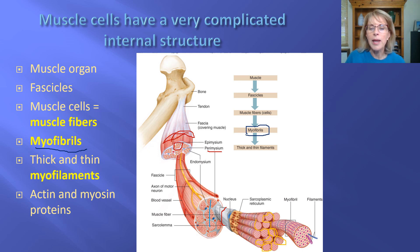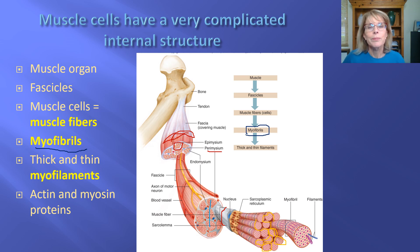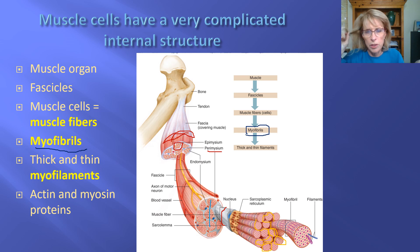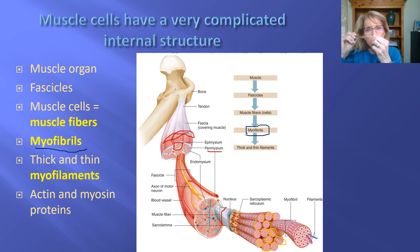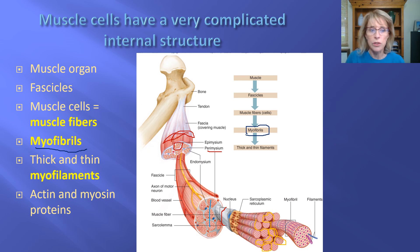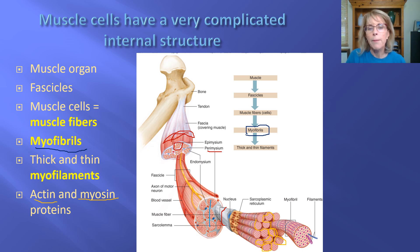The myofibril is made out of smaller structures called myofilaments. Myofilaments are proteins with really a lot of complex quaternary structure. Just like you can't see an individual keratin protein but you can clearly see hair — because there are so many individual proteins put together — inside of muscle cells there are two different proteins, actin and myosin, and those two proteins form such huge quaternary structure that they show up as these myofilaments. Myofilaments are made out of the proteins actin and myosin.